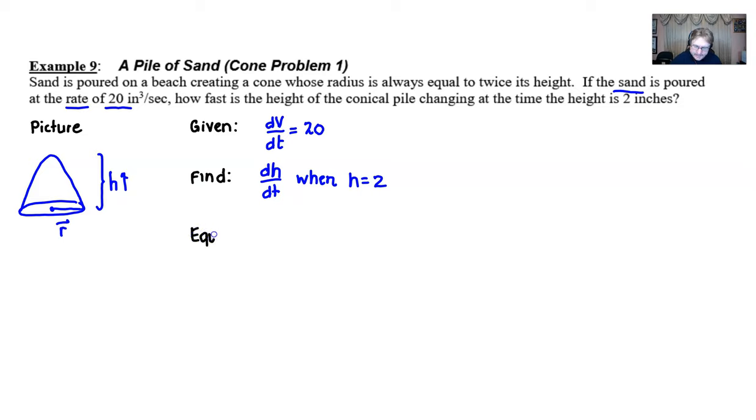Then we have our equation. Fortunately you won't have to work real hard for the equation because an equation as such would be provided for you. That would be our good friend the volume of a cone, which is one-third pi r squared times h. That's a formula that will always be provided.